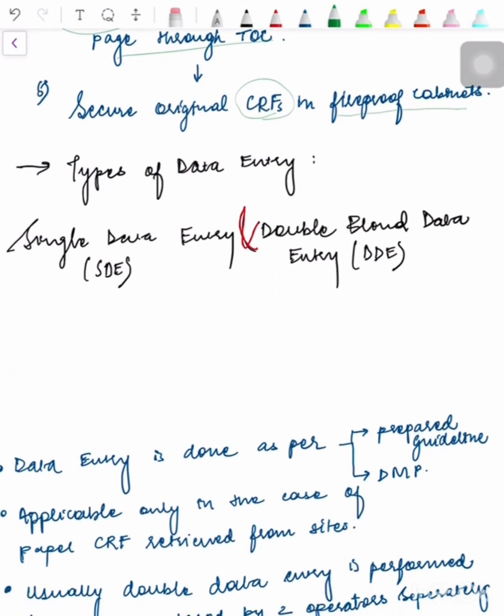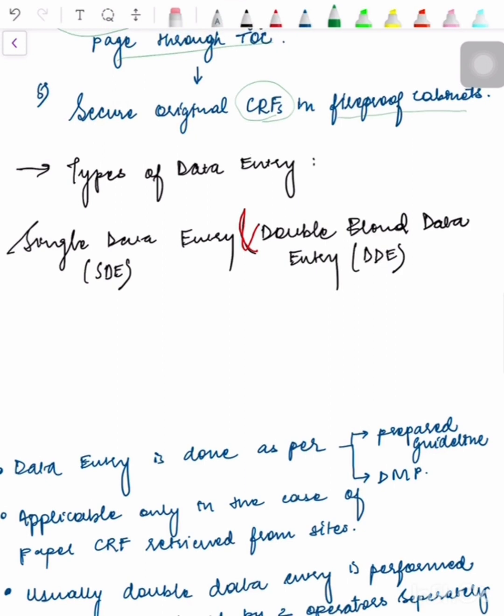When we do data entry, there are two types: Single Data Entry and Double Data Entry. Single Data Entry is the most common data entry method. The transcription of information from a paper form by manual entry into a file using a computer system software package. The data entry can be performed by a single person, which is why it's called Single Data Entry.